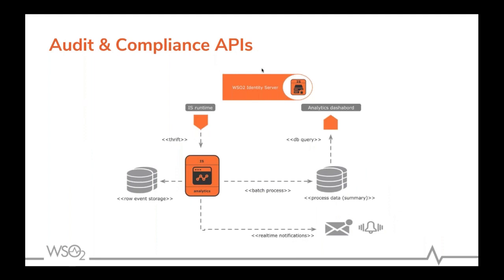Audit and compliance APIs support monitoring of user access to resources, administrator changes to the system, as well as auditing and forensic capabilities. For forensic capabilities, you can integrate the IAM platform with a fraud-detection engine or analytics engine, feeding all security events to it to generate the events you need to handle. For auditing purposes, from a developer's perspective, this is an important requirement when it comes to monitoring user access and security incident analysis.